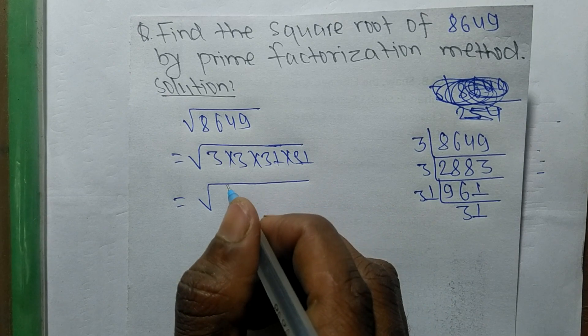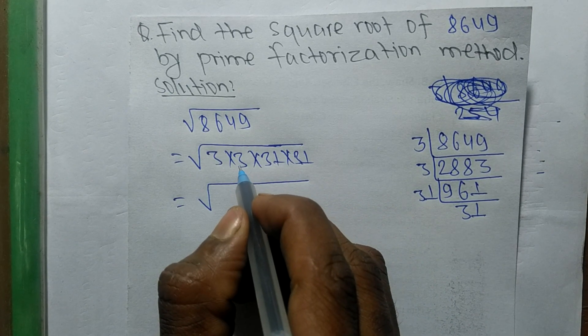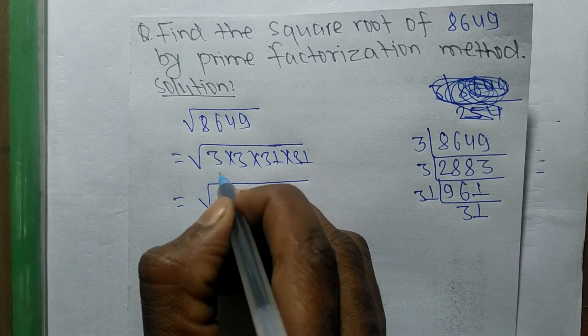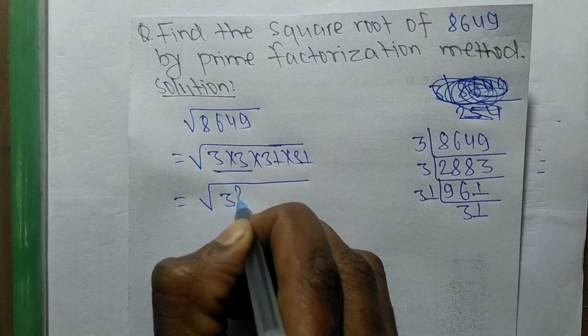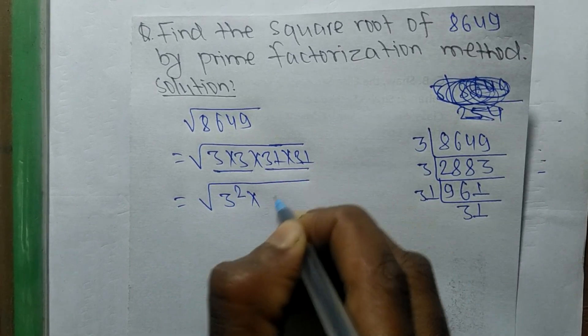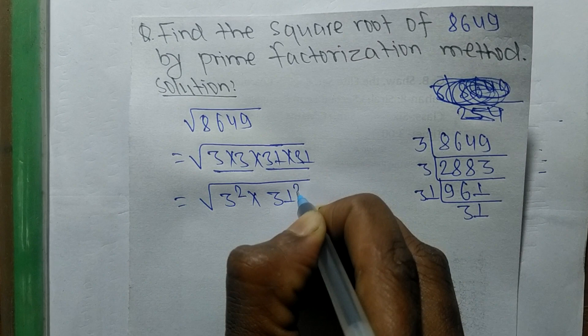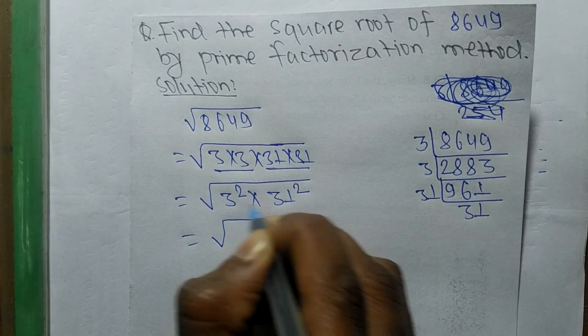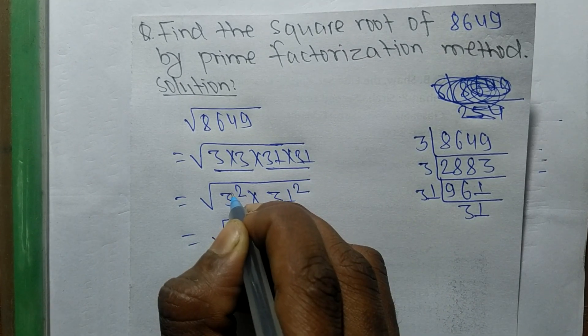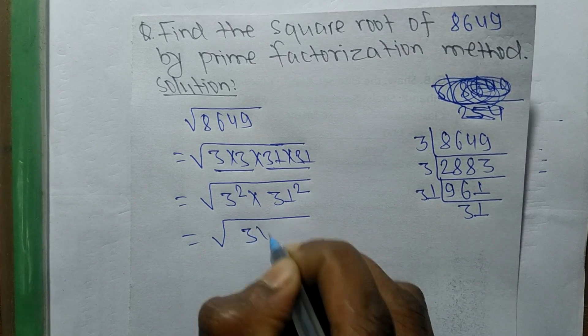So we are finding the square root, therefore we make the square of all these numbers. So 3 into 3 is 3 squared, and 31 into 31 is 31 squared. So both their numbers contain a square, so we can write 3 into 31 whole squared.